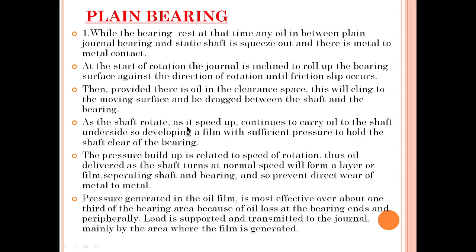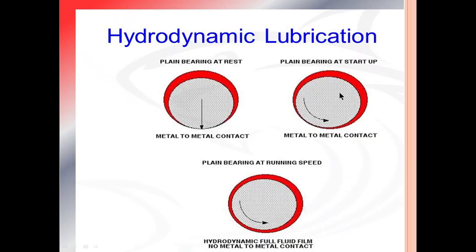At the start of rotation, the journal is inclined to roll up the bearing surface against the direction of rotation until friction slip occurs. Provided there is oil in the clearance space, it will cling to the moving surface and be dragged between the shaft and the bearing. A friction slip occurs and an oil wedge is formed in between the intermediate shaft and the bearing. This oil wedge tends to squeeze oil in between the shaft and the bearing, causing a small amount of upliftment of the intermediate shaft.